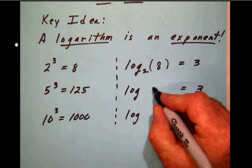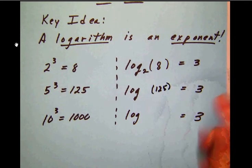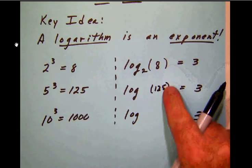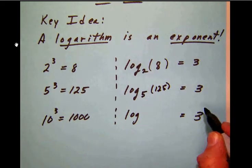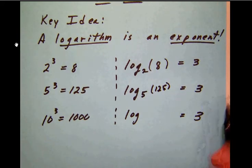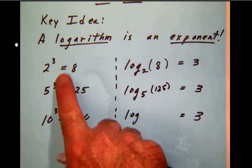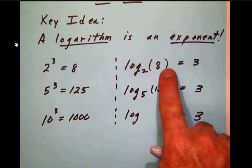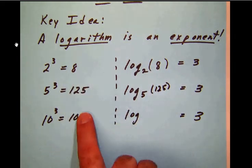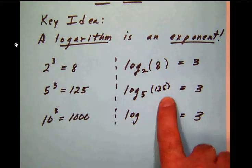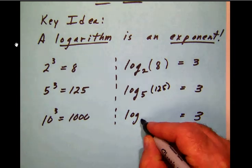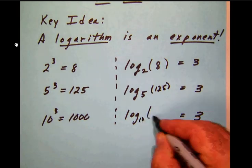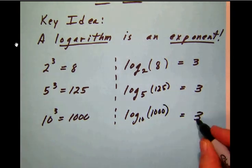Likewise, we can say that the logarithm of 125 is 3. But to not confuse these two, we would have to specify down here that the base of this logarithm is 5. So these expressions here say exactly the same truth. It's just that one of these is in exponential form. Over here, we have logarithmic form. And as you might guess on this last one, log to the base 10 of 1,000 equals 3.